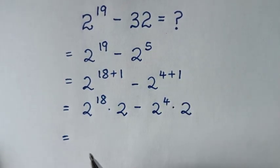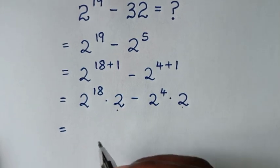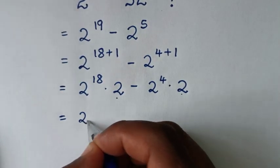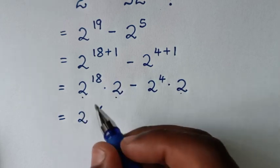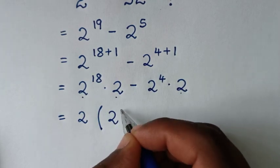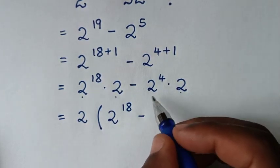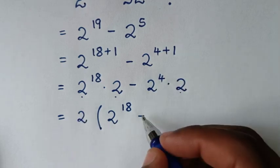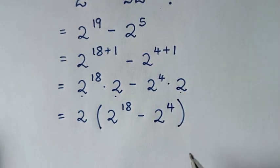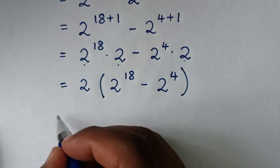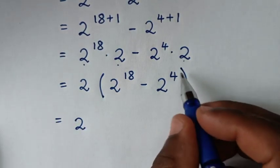Then it will be equal to: from here 2 is now in common, so we will take 2 out of the bracket. This divided by 2 is 2 power of 18, then minus this divided by 2 is 2 power of 4, bracket. Then in the next step it will be equal to 2.